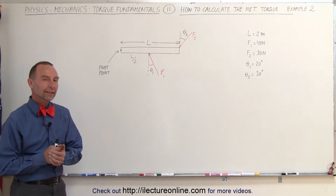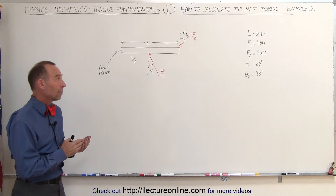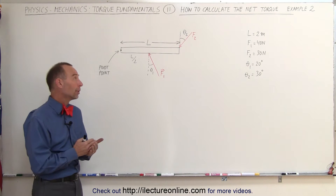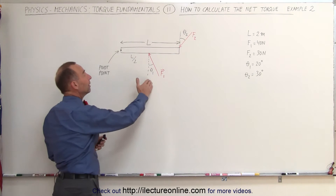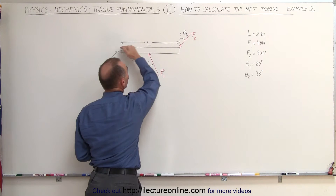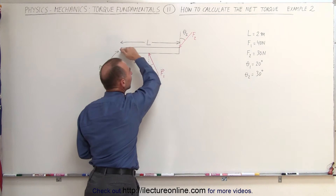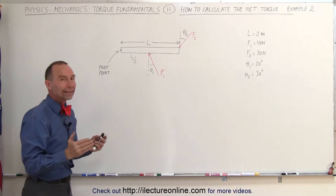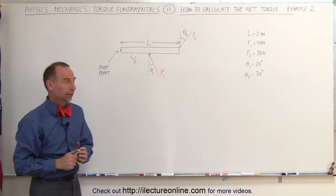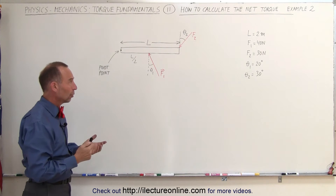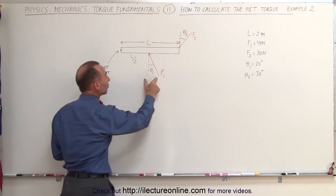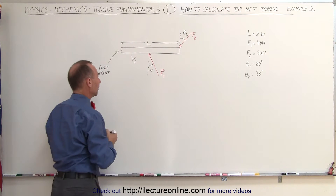Welcome to ElectronLine. In this example we see that there are a lot of similarities to the previous example, except that both F1 and F2 are no longer acting perpendicular to the length of the beam. They now are acting on the beam with an angle relative to the perpendicular. So we still follow the same principle, but we now have to take into account the two angles as well.